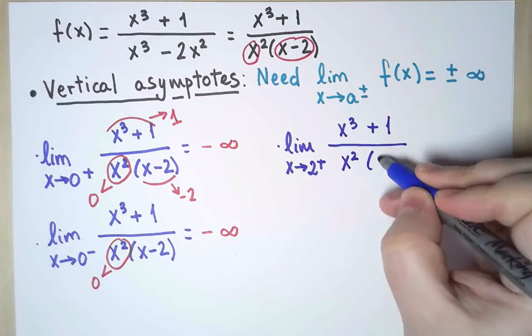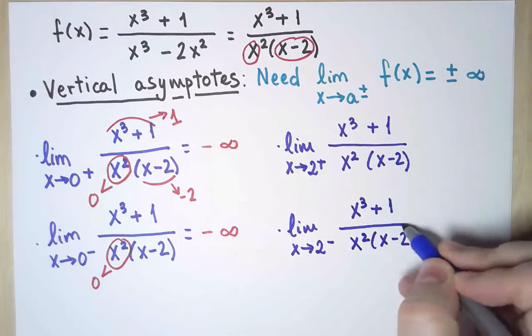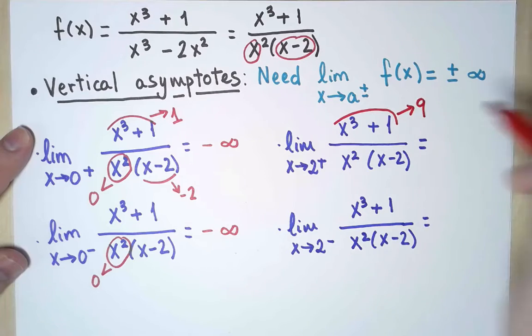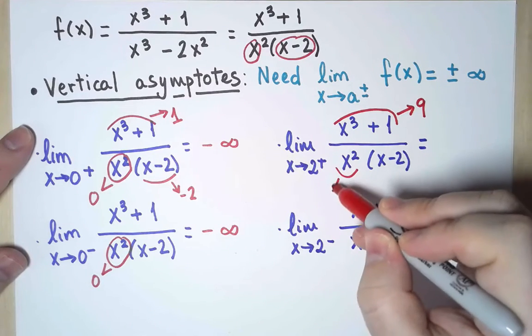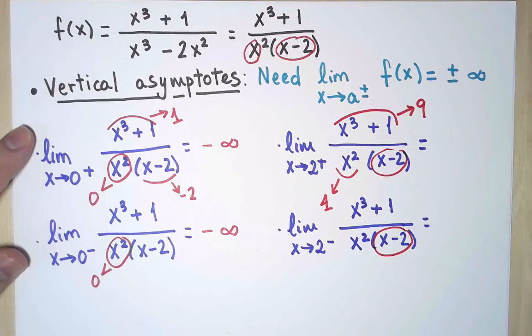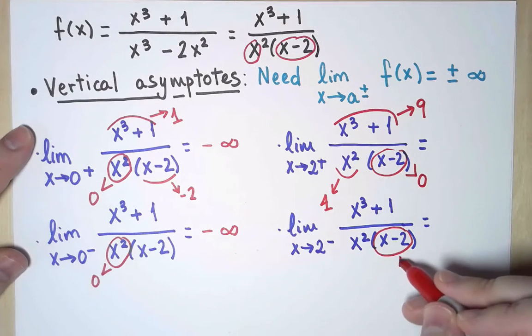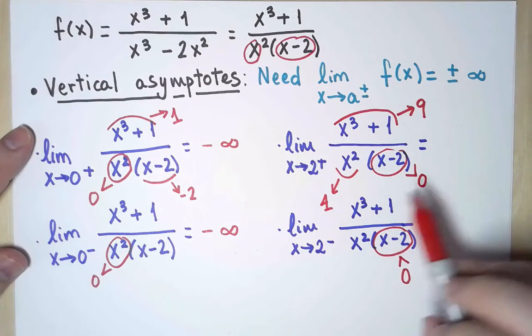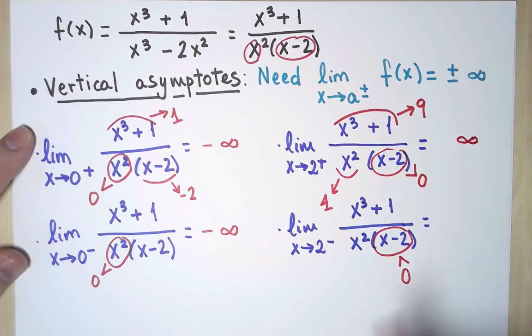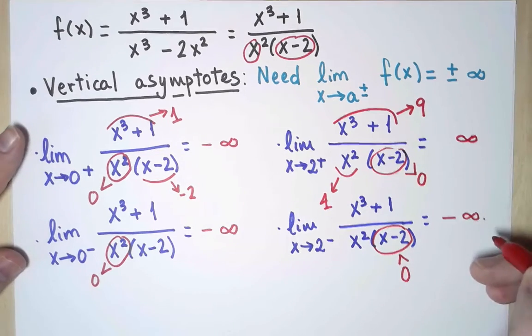So let's calculate the two side limits at 2. Now, as x approaches 2, the numerator is approaching 9, stays positive, and x squared is approaching 4, stays positive. But this piece behaves differently on both sides. When x is greater than 2, this is going to be positive, and when x is smaller than 2, this is going to be negative. So the full function is positive when x is close to 2 on the right, so the limit is infinity. And the full function is negative when x is close to 2 on the left, so the limit is minus infinity.